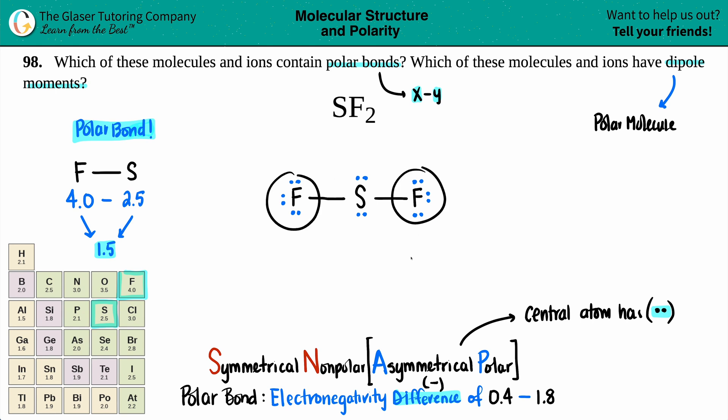You might say to yourself, well, I have two fluorines, right? So they cancel out. That's symmetry. But the chlorine in the middle, it's got two lone pairs. It's got four total dots. This has to be polar. No exceptions. So since that sulfur does have lone electrons, it is classified as a polar molecule.